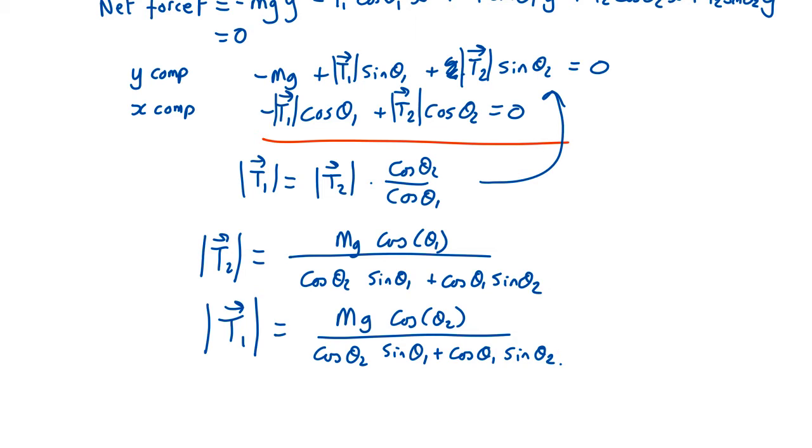Now let's check all this. First of all, we can check units. This is a tension, which is a force. All the cos and sines are ratios, so they have no units. It's just mg, which is also a force. So the units balance in both these things.